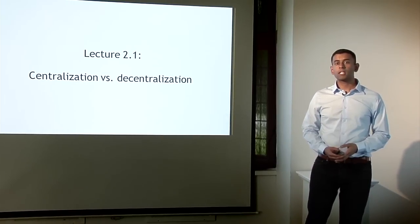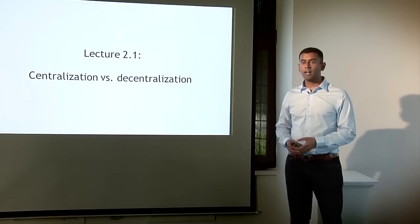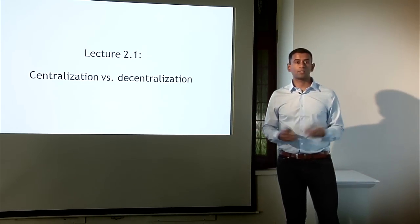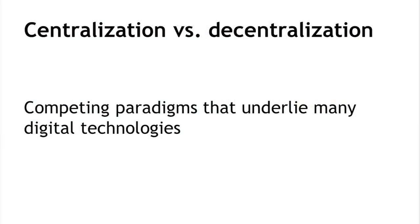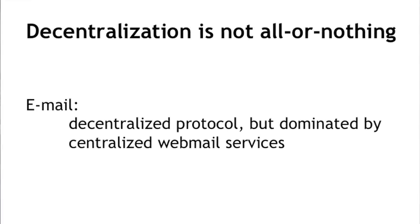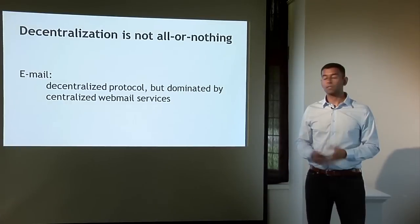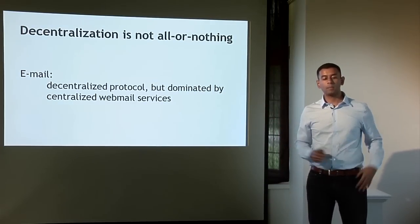Decentralization is an important concept not just for Bitcoin. This notion of competing paradigms of centralization versus decentralization plays out in a variety of different digital technologies. To understand Bitcoin's decentralization, I want to start with the caveat that decentralization almost always is not all or nothing — almost no system is purely decentralized or purely centralized. A good example is email, which is a decentralized system fundamentally, based on a standards-based protocol SMTP, but what has happened especially in the last decade is a dominance of a few different webmail providers — centralized service providers — and this might be a good model for understanding what might be happening to Bitcoin.